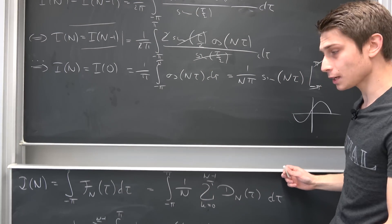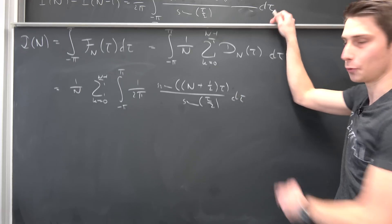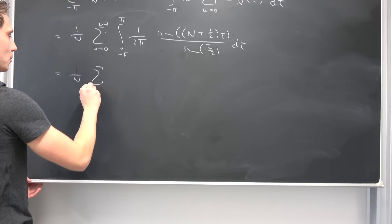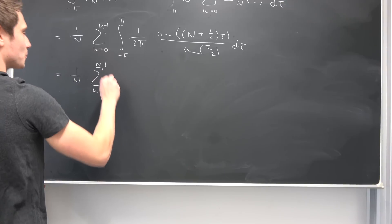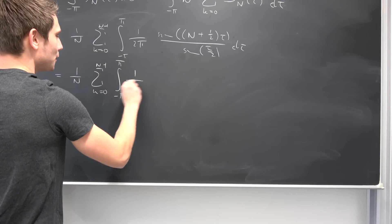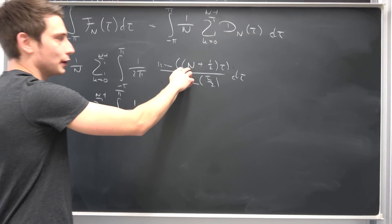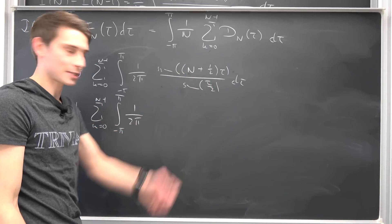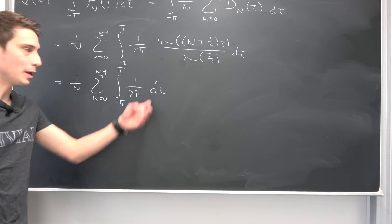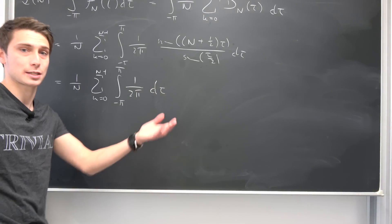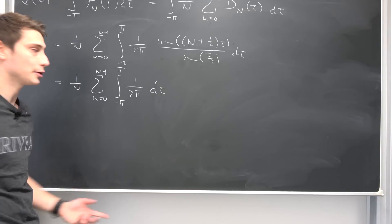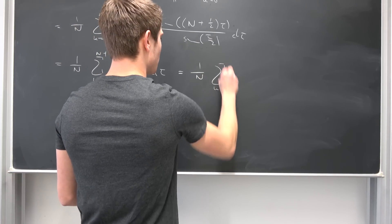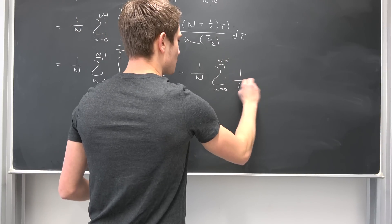Isn't it absolutely amazing? So we can actually calculate I(0) right here — it's really easy to calculate. We get 1 over n times the sum running from 0 to n minus 1, integral from negative pi to pi, 1 over 2 times pi. With n being 0, sine of tau/2 over sine of tau/2 is just 1. So integrating a constant is just the constant times tau.